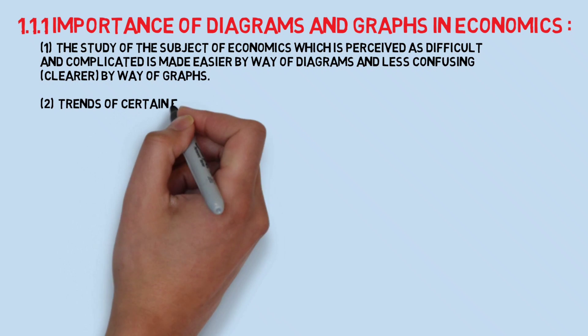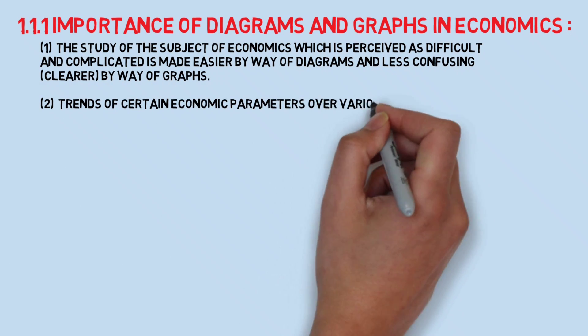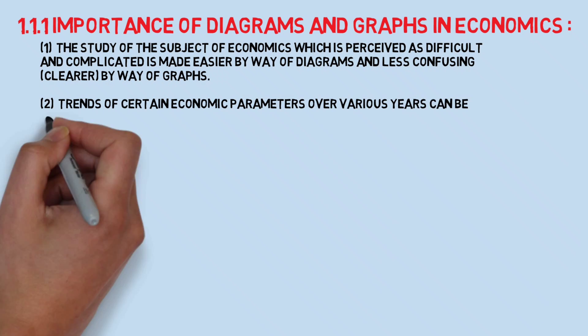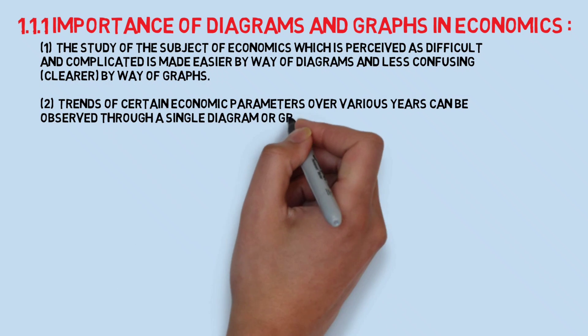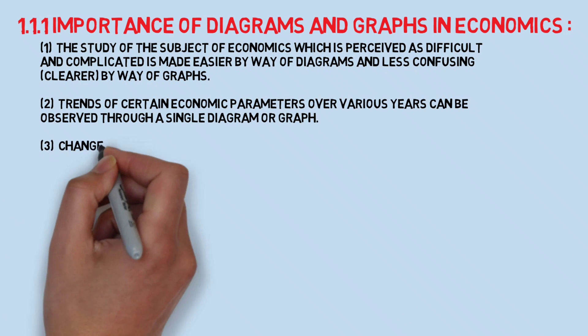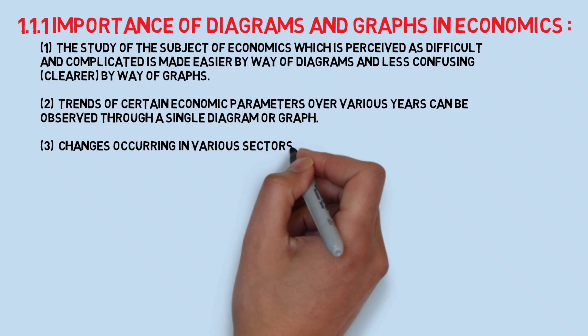Number two, trends, that is changes of economic parameters, can be understood easily by the use of diagrams and graphs. Number three, changes in every sector can be understood easily, for example ups and downs in price of products in various sectors.